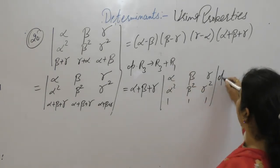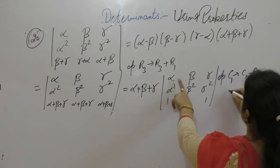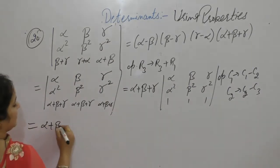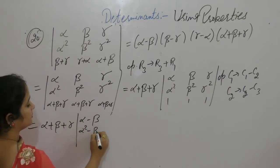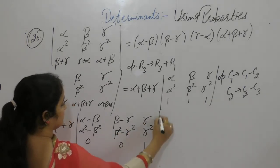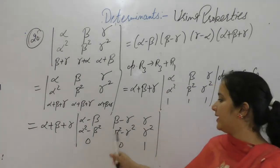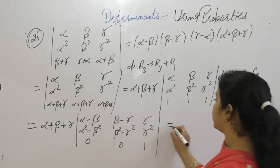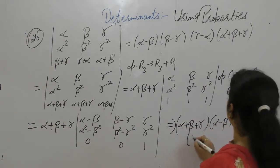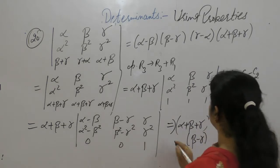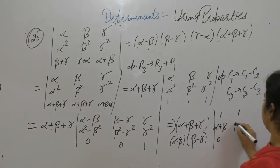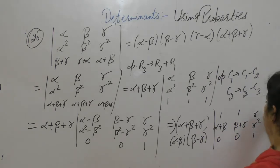Now we want (α minus β), so operate C1 as C1 minus C2 and C2 as C2 minus C3. So (α plus β plus γ) times C1 minus C2 and C2 minus C3. Now take (α minus β) common from C1 and (β minus γ) common from C2. We are left with: row 3 entries 1, 0, 1; row entries 0, beta plus gamma; gamma, gamma squared, 1.